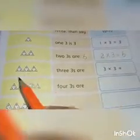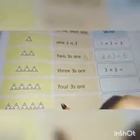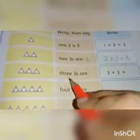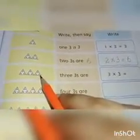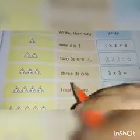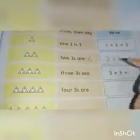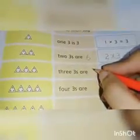Here we have three triangles and each triangle has three dots. The number of triangles is three and the number of dots is three. Three threes are nine. Write nine in the box.